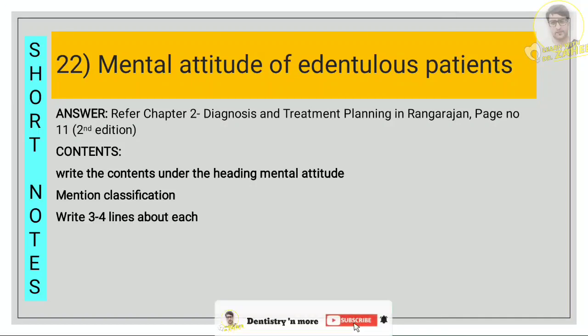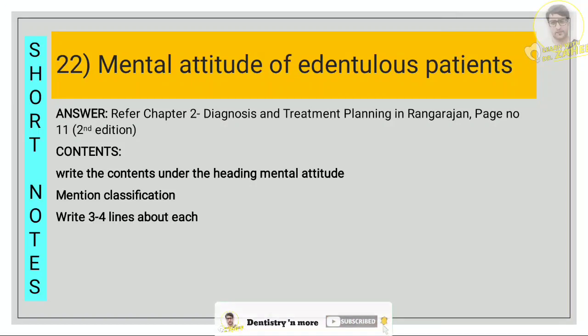For mental attitude of the edentulous patient, refer chapter 2, page number 11. First write the contents under the heading mental attitude, then mention the classification with three to four lines about it. All four classifications should be mentioned: the philosophical patient, exacting, indifferent, and hysterical patient.